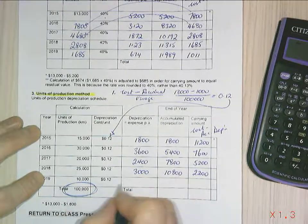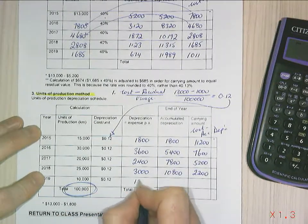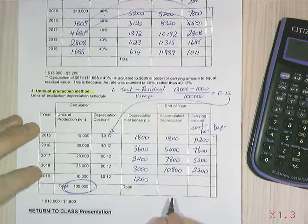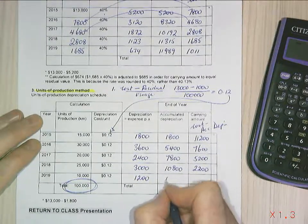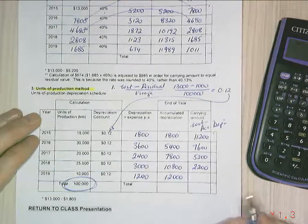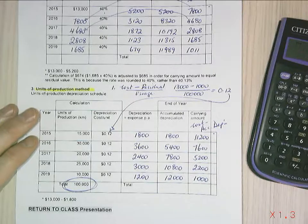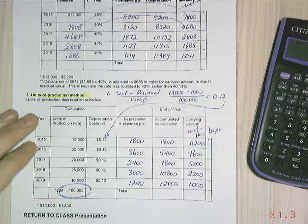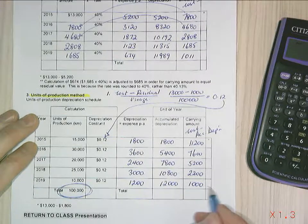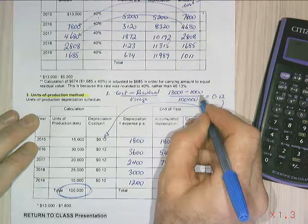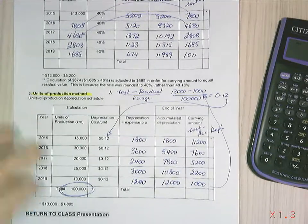Last year, I've got 10,000 kilometres worth of usage, $1,200 worth of depreciation. My accumulated depreciation moves up to $12,000, which leaves me with the $1,000 residual value, which is what we calculated at the start.